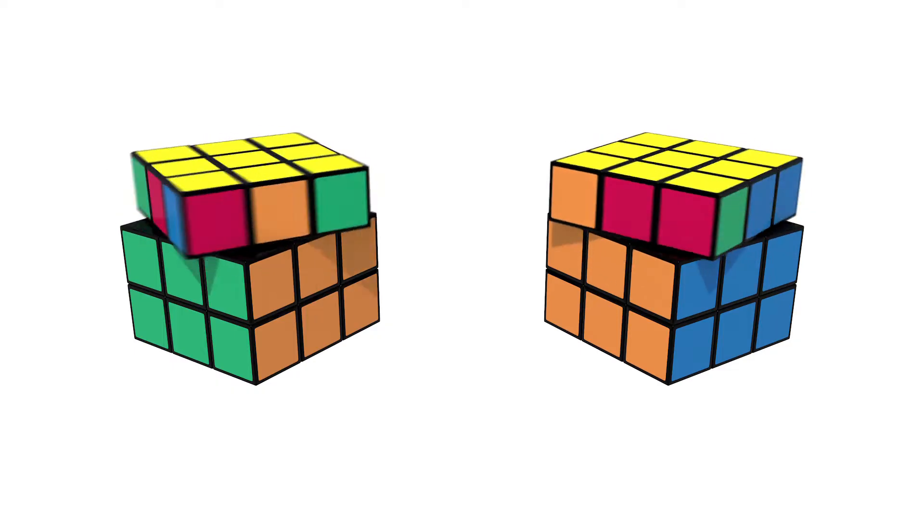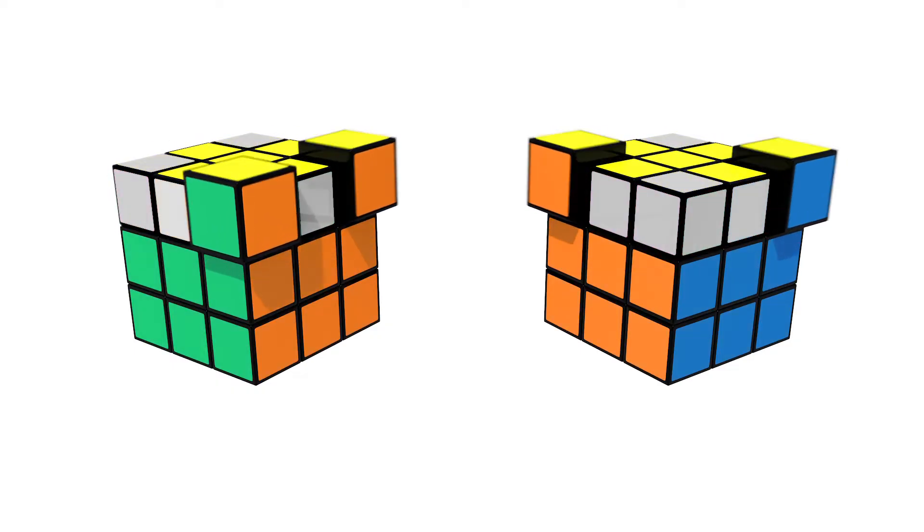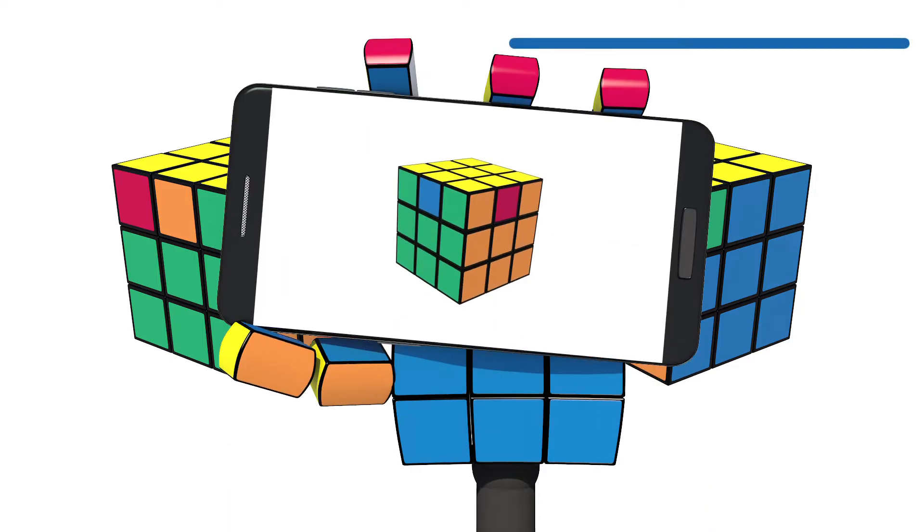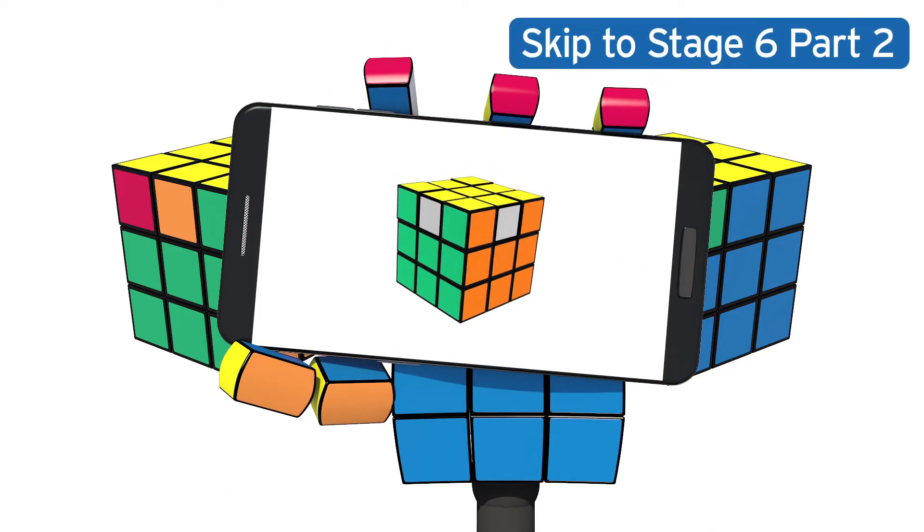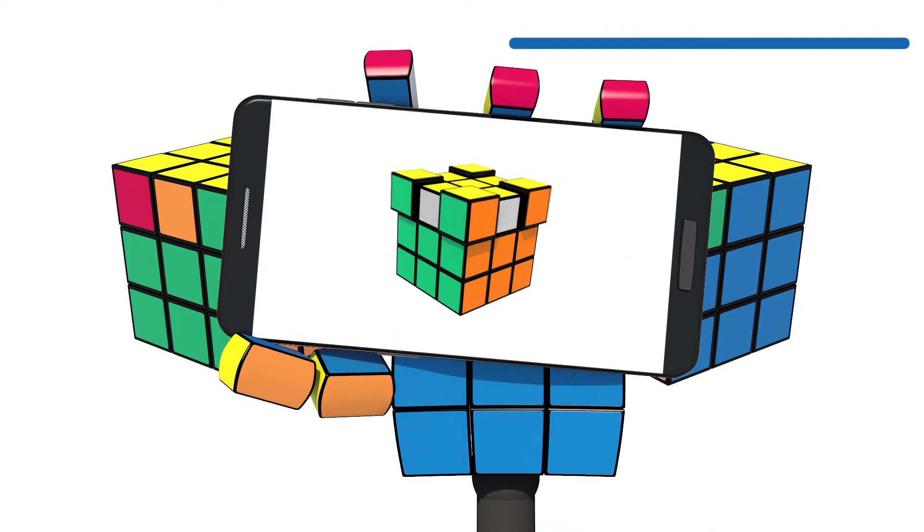Twist the top face until at least two corners are in the right location. If you get lucky and all four corners are in the right place, then move on to stage six, part two.